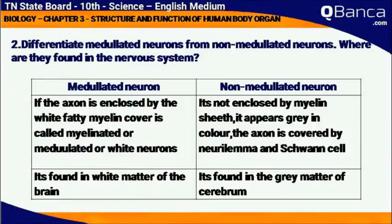Differentiate medulated neurons from non-medulated neurons and where are they found in the Nervous System? Medulated neurons: when the axon is enclosed by the myelin cover, it is called a myelinated or medulated neuron.